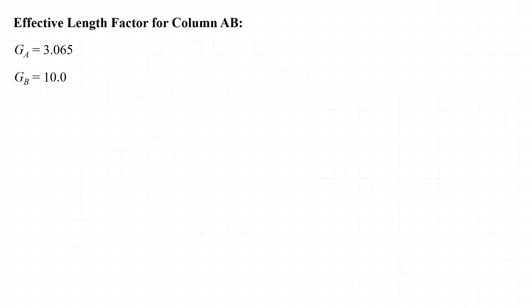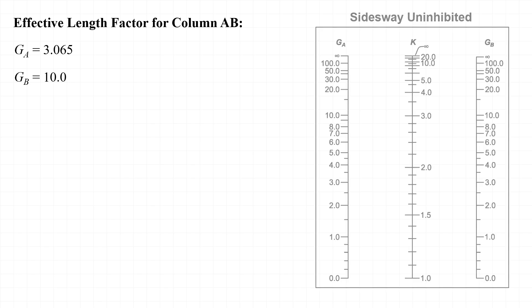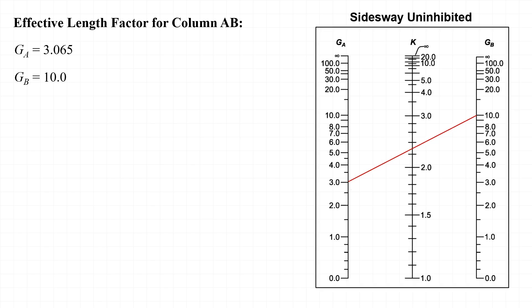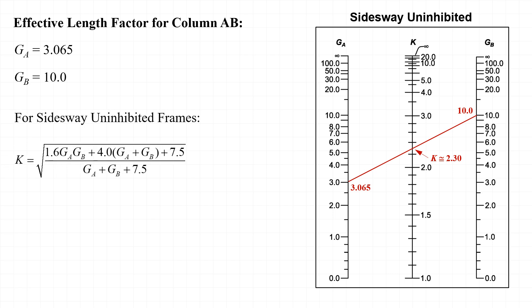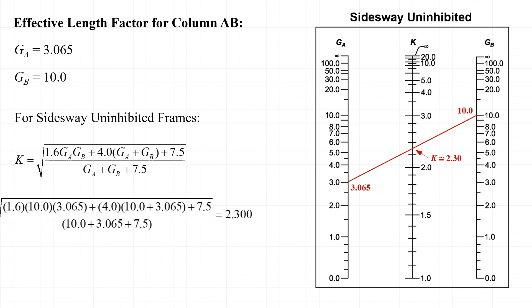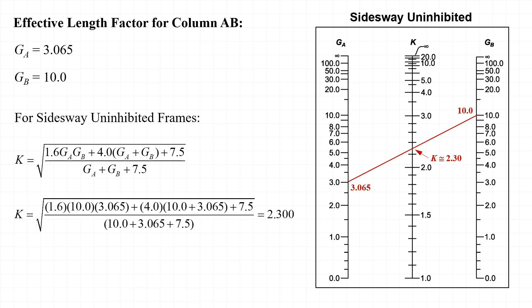Now that we know G_A and G_B are 3.065 and 10.0 respectively, we can determine the effective length factor for column AB. Using the alignment chart by drawing a straight line from 3.065 on one side to 10.0 on the other, k is approximately equal to 2.3. Using the equation to calculate k more precisely, we find k equal to 2.300. I'll use k = 2.300 when calculating the strength of the column.